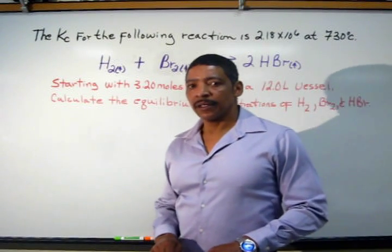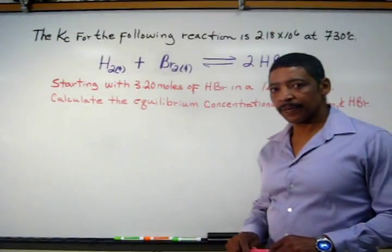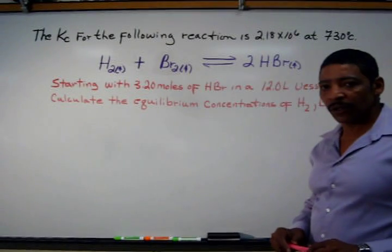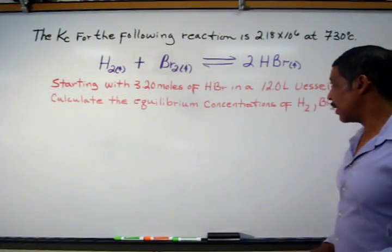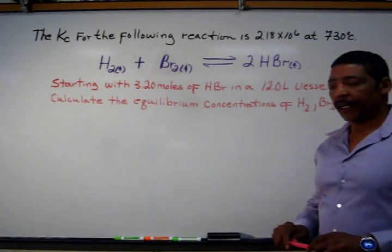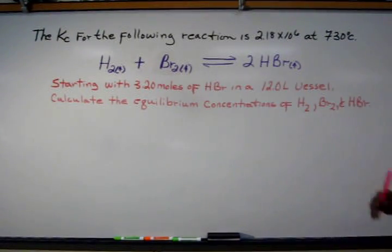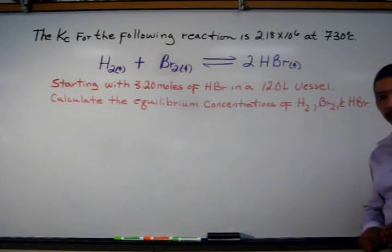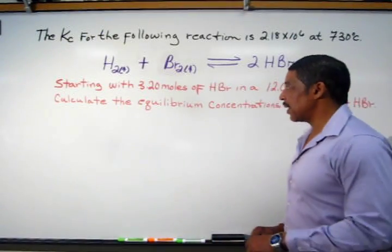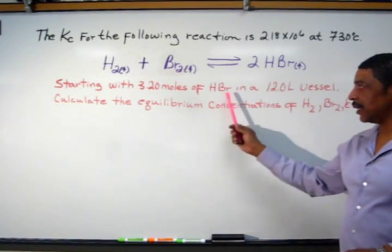Suppose we are given the following starting concentration for hydrogen bromide. According to the practice problem, we are starting with 3.20 moles of HBr in a 12 liter vessel. We are asked to calculate the equilibrium concentrations of hydrogen gas, bromine vapor, and the HBr. It is possible to calculate the equilibrium concentrations for the reactants and the products because we are given a starting amount for the HBr.